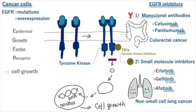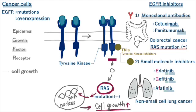When using EGFR monoclonal antibody drugs, especially for colorectal cancer, it's crucial to check for RAS mutations. RAS is a key part of the signaling pathway. If there are mutations, it stays active even without normal signals, so blocking signals from the receptors above doesn't stop cancer cells from growing. RAS mutations are common in cancer, especially colorectal cancer. That's why it's important to test for RAS mutations before deciding to use EGFR monoclonal antibody drugs.